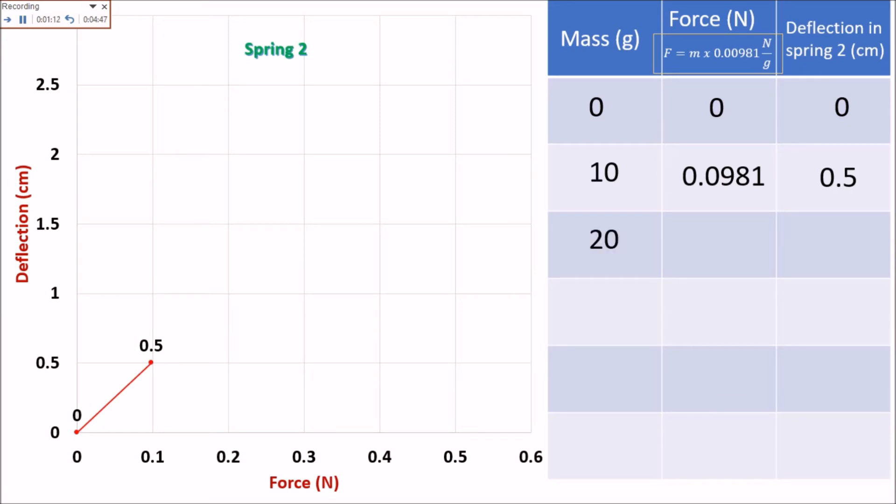For 20 grams, we have 0.1962 newton, and the deflection is 1.1 centimeters.